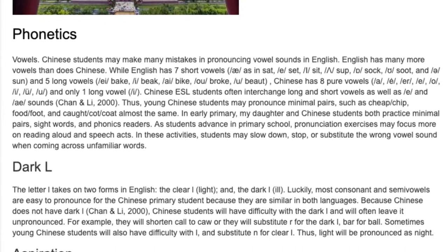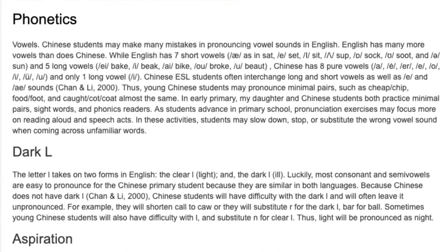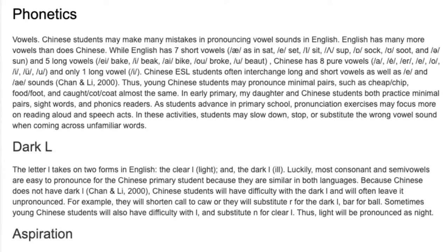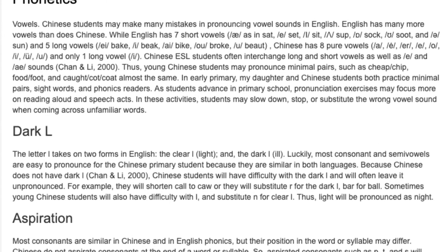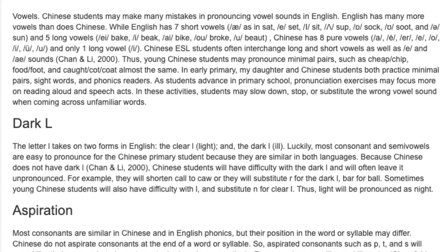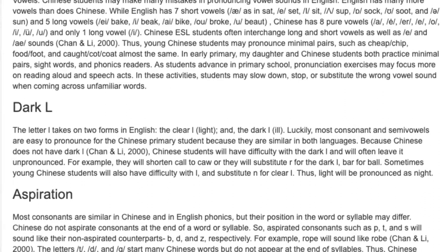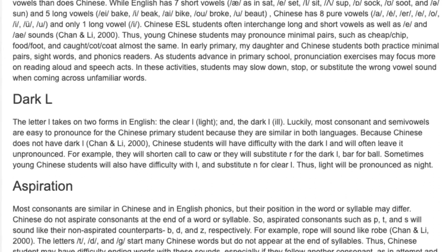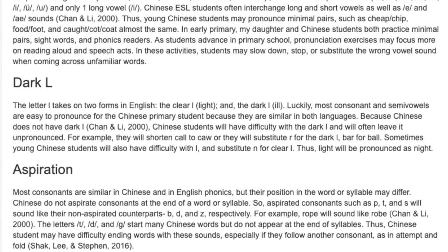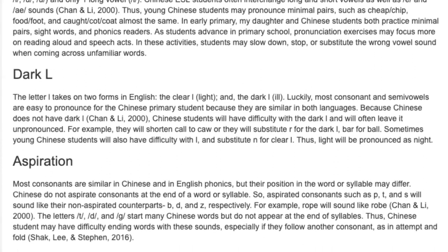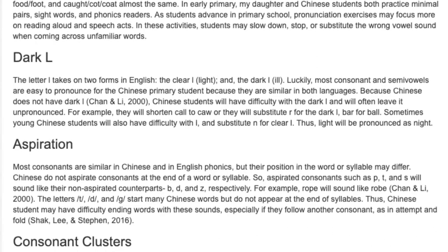Dark L. The letter L takes on two forms in English: the clear L and the dark L. Most consonants and semi-vowels are easy to pronounce for the Chinese primary student because they are similar in both languages. Because Chinese does not have the dark L, Chinese students will have difficulty with it and will often leave it unpronounced. For example, they will shorten 'call' or substitute R for the dark L. Sometimes young Chinese students will also have difficulty with L and substitute N for clear L — thus, 'light' will be pronounced as 'night'.